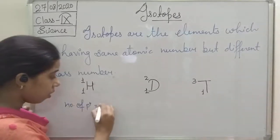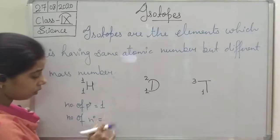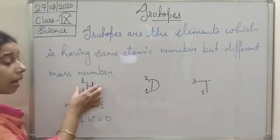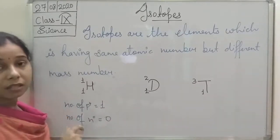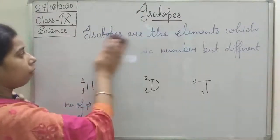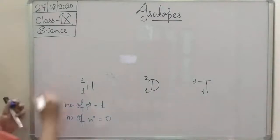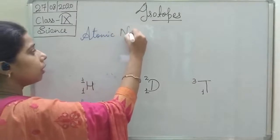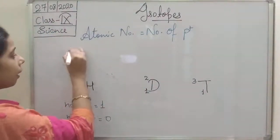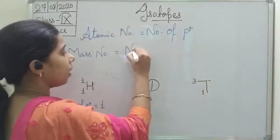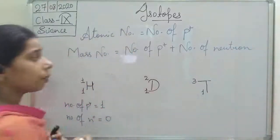The number of protons equals the atomic number, so number of protons is 1. The number of neutrons equals 0. Why 0? Because the mass number is 1 and atomic number is 1. Atomic number equals number of protons. Mass number equals number of protons plus neutrons. So atomic number equals number of protons, and mass number equals number of protons plus number of neutrons.